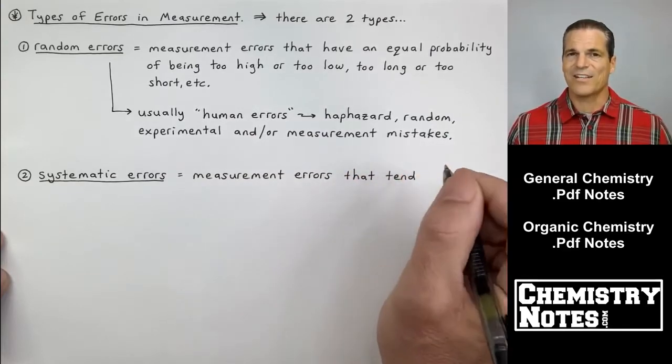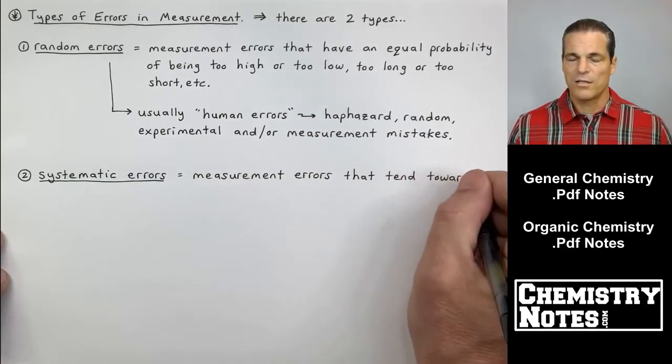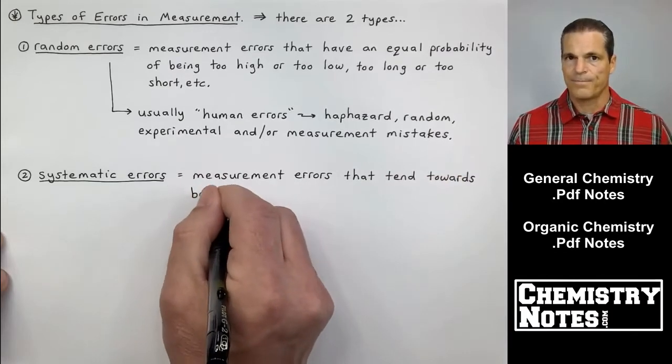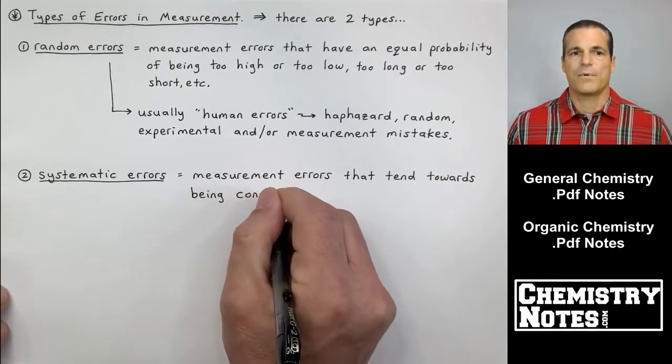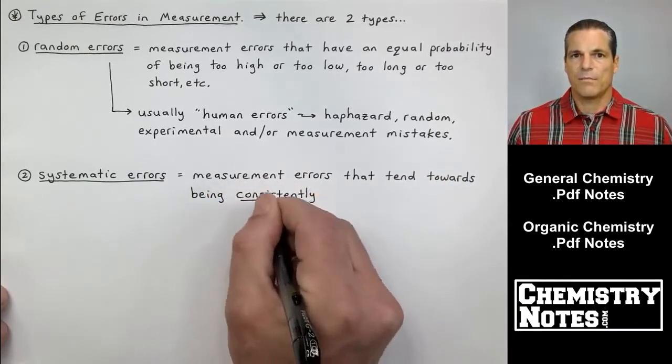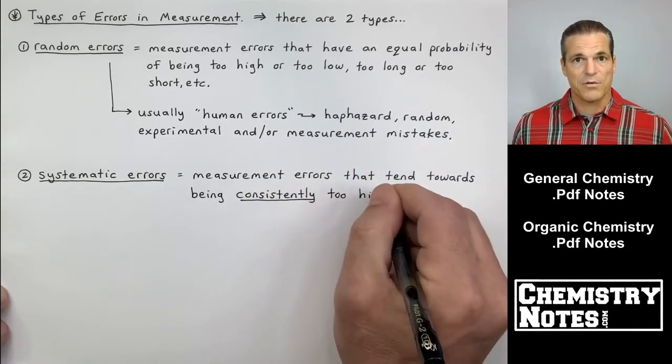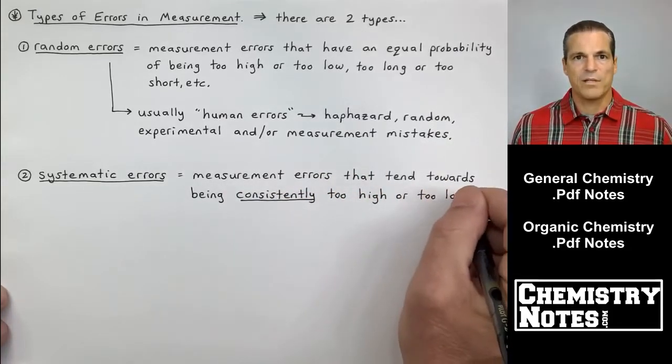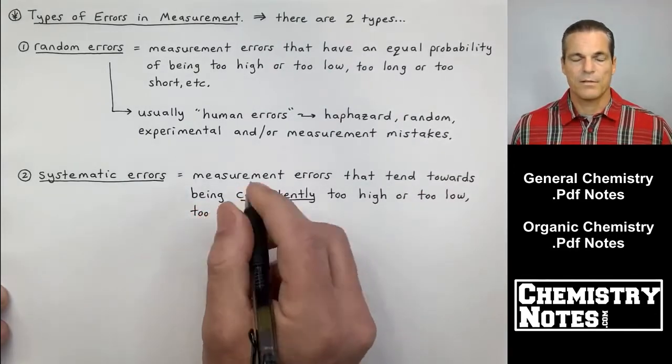Systematic errors are errors that are consistently wrong in one direction or the other. So, for example, if you have an analytical balance that's not calibrated correctly, maybe every measurement is too high. See what I mean?